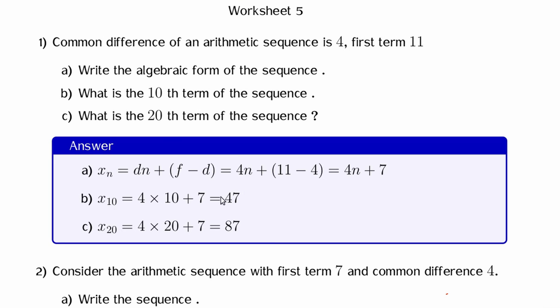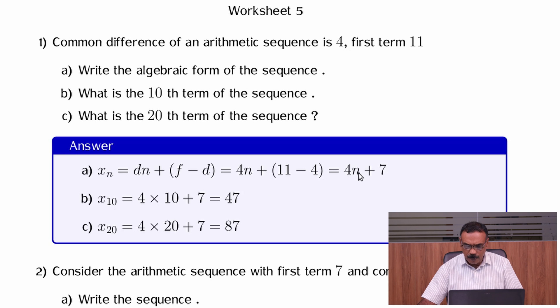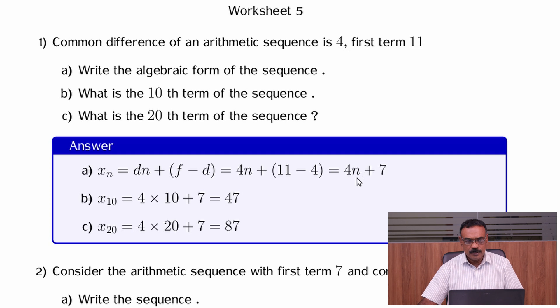If the algebraic form is 4n + 7, the 10th term is 4 into 10 plus 7. The first term is 4 into 1 plus 7. The second term is 4 into 2 plus 7. The fifth term is 4 into 5 plus 7.